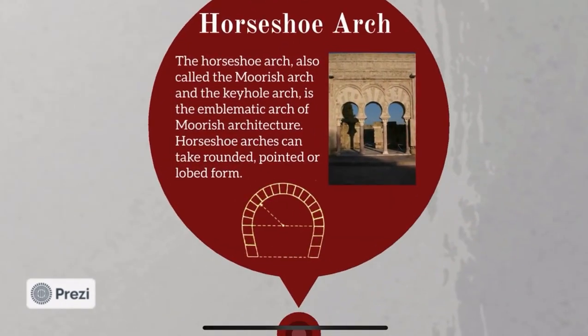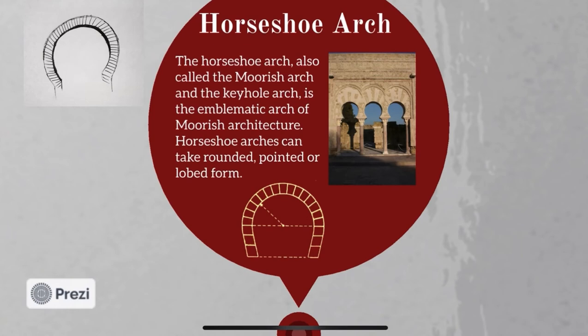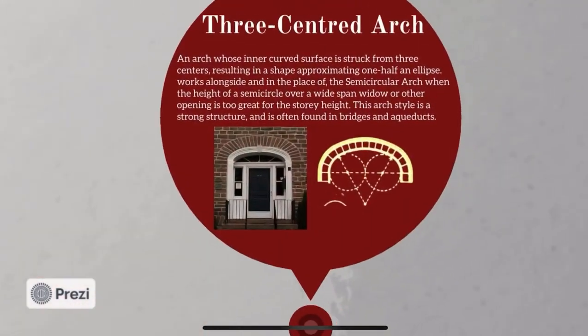And then came the horseshoe arch, also called the Moorish arch and the keyhole arch. It is the emblematic arch of Moorish architecture. Horseshoe arches can take form as rounded, pointed or lobed.